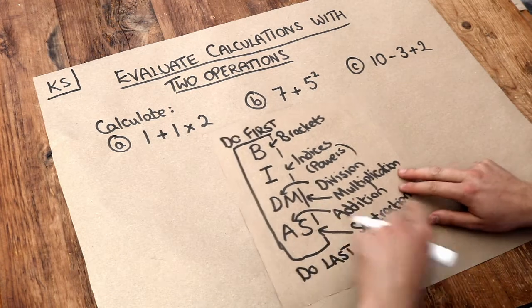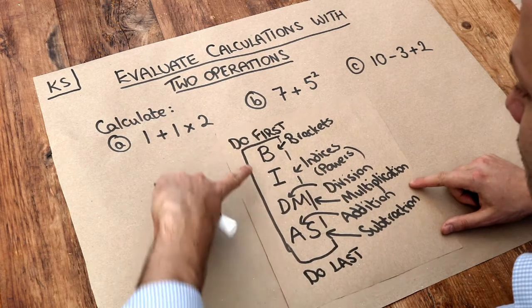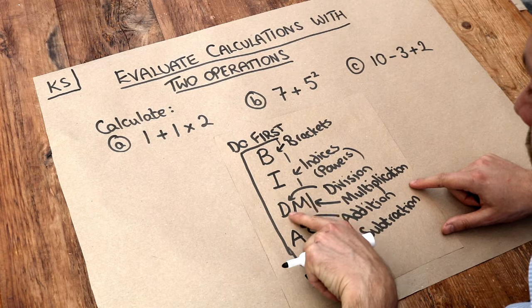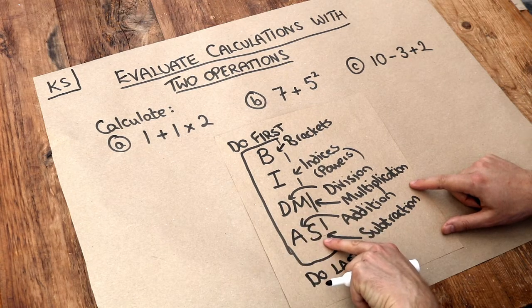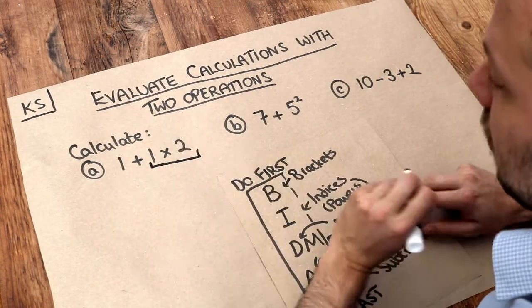So for example, in this expression here, we've got an addition and a multiplication. Which do we do first? Well, if we look down our BIDMAS table, we can see that division and multiplication comes first before addition and subtraction, which would be done last. So we need to do this bit of the expression first, the multiplication.